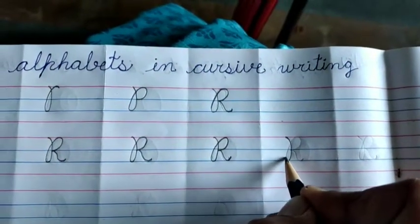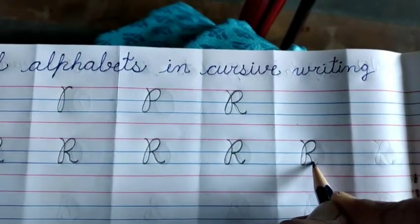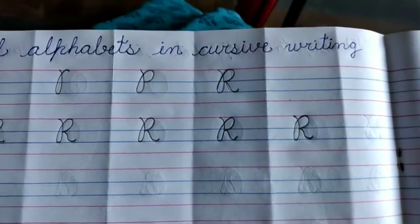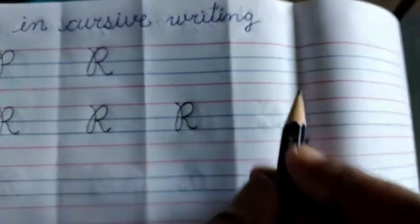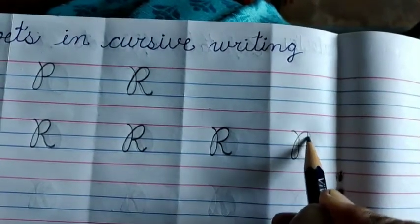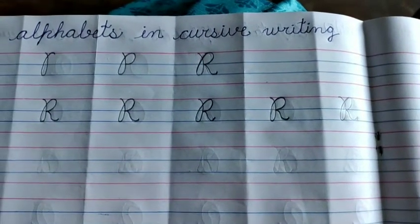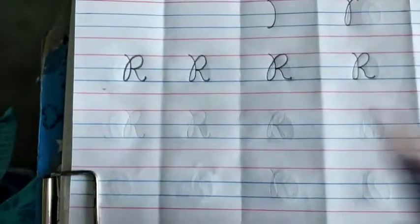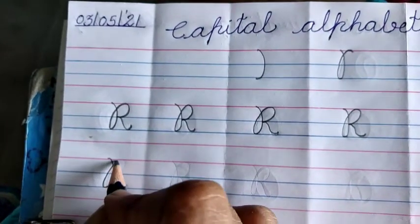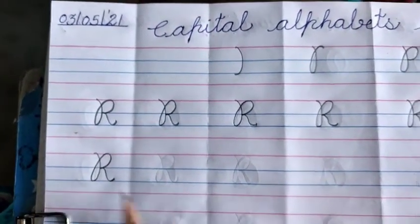Start from the red line, take a little turn, go up to touch the red line, make a half circle, join, make a slant line and take a little turn. This is letter R. Do like this, do like this, and do like this, and do like this. This is letter R.